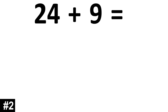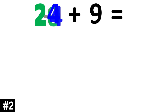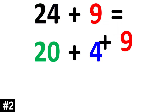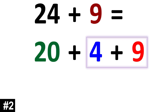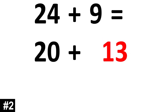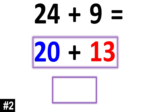Let's look at our next example: 24 plus 9. The 24 can be broken down into 20 plus 4. So now we have 20 plus 4 plus the other 9. 9 plus 4 is 13. So now we just add that 13 to the 20. 20 plus 13 is 33.